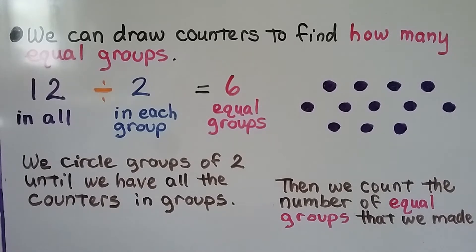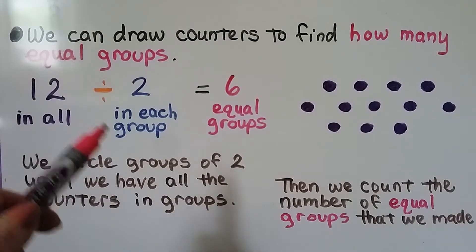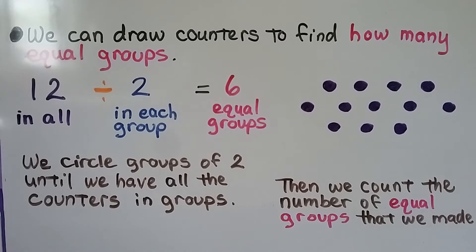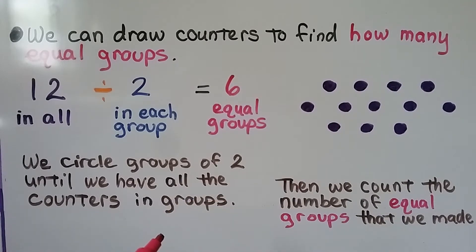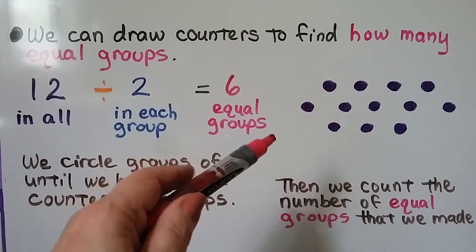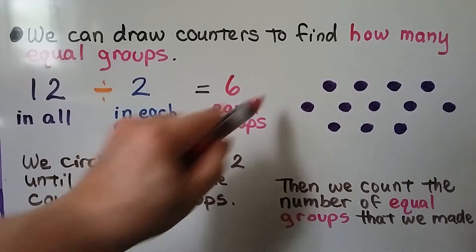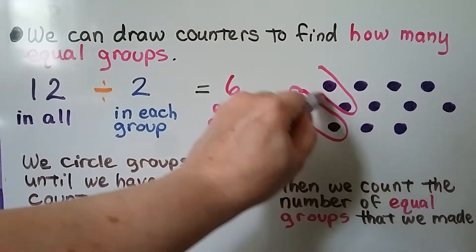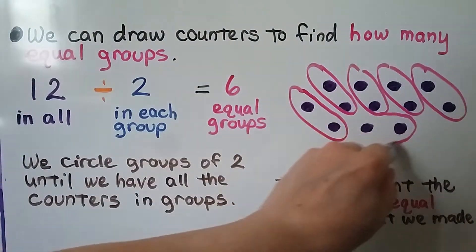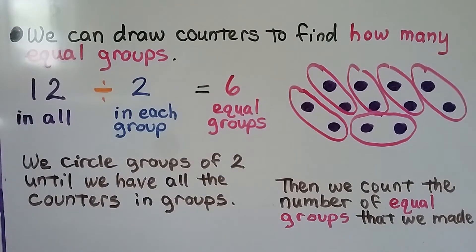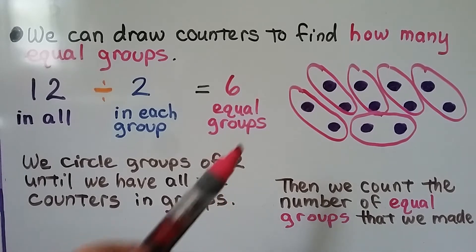We can draw counters to find how many equal groups. We have 12 in all and there's 2 in each group, so we're going to have 6 equal groups. We draw 12 little dots and circle groups of 2 until we have all the counters in groups. We circle groups with 2 in each group, making 6 equal groups. We count the number of equal groups that we've made and that's our quotient.